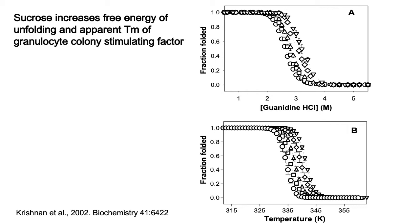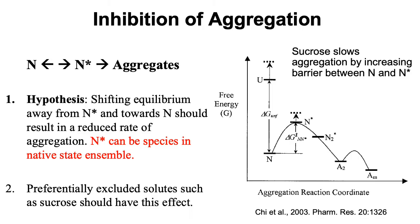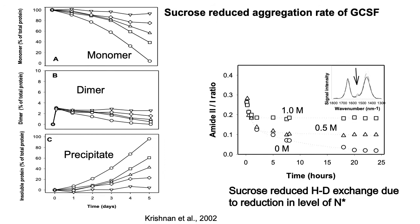These are data for granulocyte colony stimulating factor. With guanidine unfolding, as you increase sucrose concentration, you increase the amount of denaturant needed to unfold the protein. Similarly, with thermal unfolding, the more sucrose you have, the higher temperature you have to reach to unfold the protein. This applies to inhibition of aggregation. When proteins aggregate, they have to go through a partially unfolded state, referred to as N*, which can then interact with neighbors to form aggregates. In the presence of a preferential exclusion solute, the surface area for N* is greater than N, so the net barrier between these two states increases. Therefore, the activation energy for aggregation goes up in the presence of compounds like sucrose.